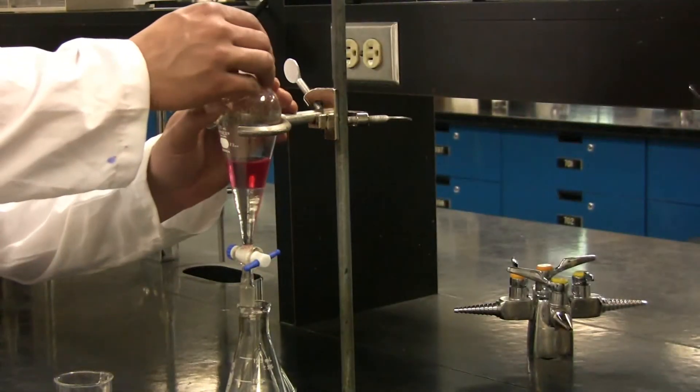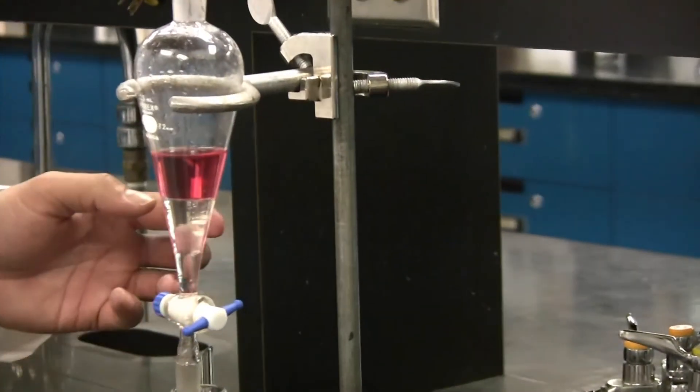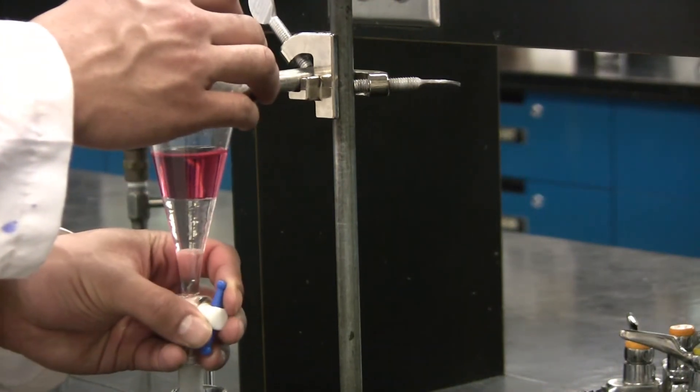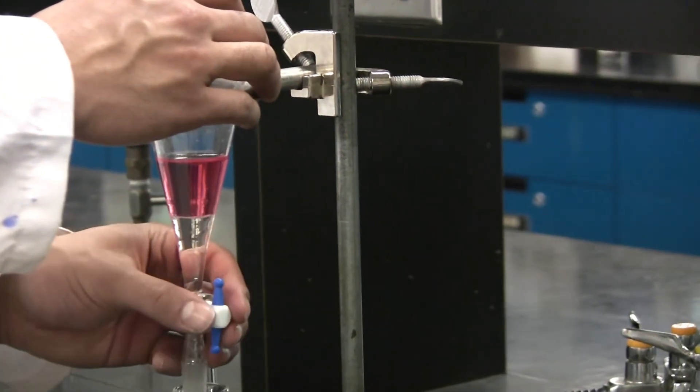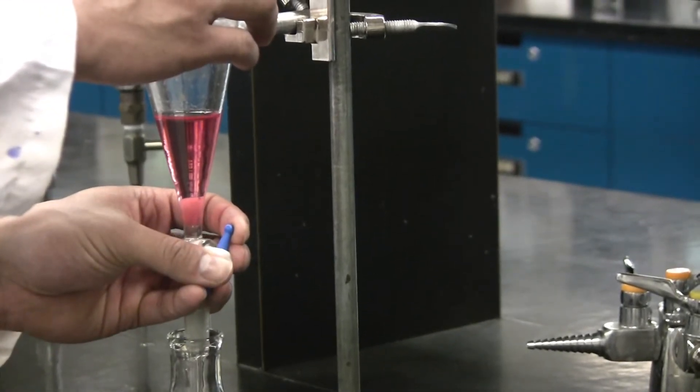When the separatory funnel is back on the ring clamp, remove the glass stopper to make sure there is no vacuum when draining one of the solutions into an Erlenmeyer flask. Make sure none of the second layer ends up in the Erlenmeyer flask. Be very careful with this part.